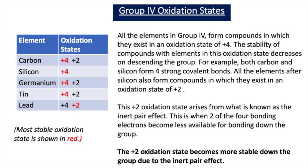The inert pair effect is the tendency for the S2 electrons not to be used in bonding. As you go down the group, the inert pair effect increases, and that's why Group 4 elements further down the group have a tendency to form the plus 2 oxidation state. When we get to lead, which is right at the bottom of Group 4, the plus 2 oxidation state is the most stable due to the inert pair effect being so strong.